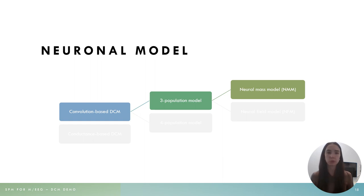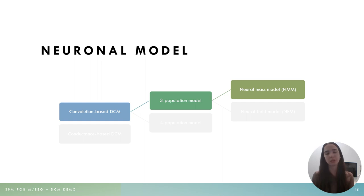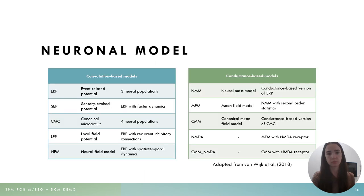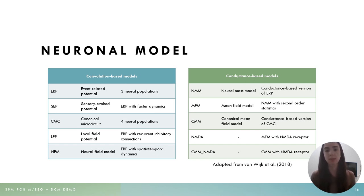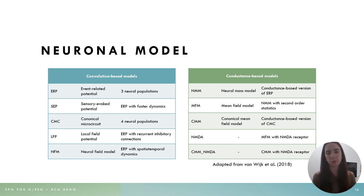The neuronal model we choose depends not on our data like the observation model, but on our research question, and it's often best to keep it as simple as possible as long as you're answering that research question. You can see all the neuronal models currently implemented in SPM — both convolution-based and conductance-based — ranging from very simple, like the ERP model which is a three-population model, to very complex models like CMM with NMDA receptors. Again, the model you use will depend on your research question, but keep it as simple as possible.